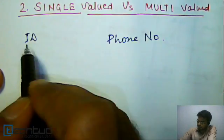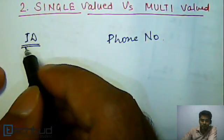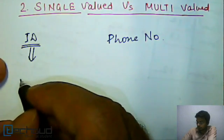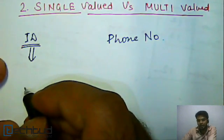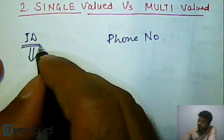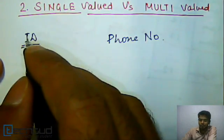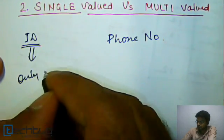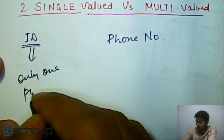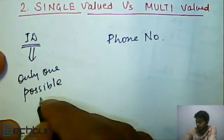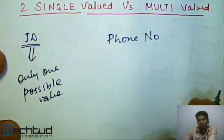So this ID which is unique for each student, which has only one possible value, or we should not say unique now. Unique is something different. This attribute has only one possible value.